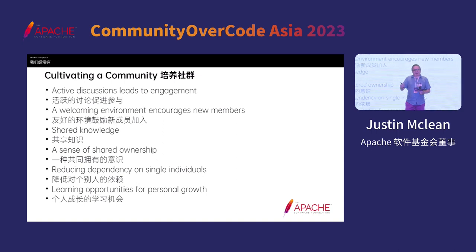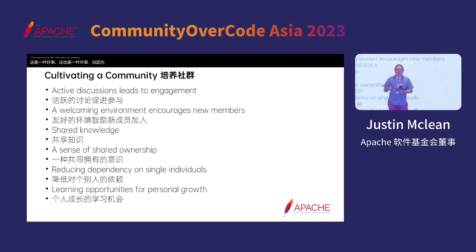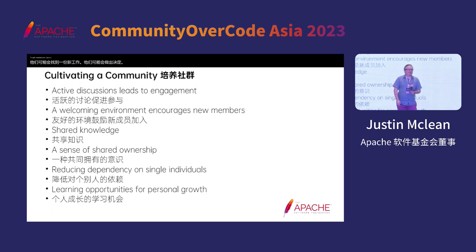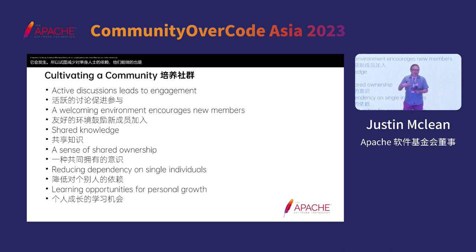We often have projects with individuals who are exceptional — they know the project very well, are highly productive, and write huge amounts of code. This is a good thing, but also a bad thing. If this one person decides to leave — gets a new job, starts a family, or just moves on — that creates a problem. So trying to reduce the dependency on a single person is something you're going to have to do to grow a community and make it resilient over time.